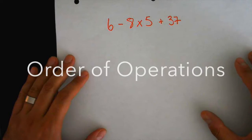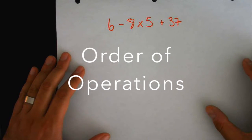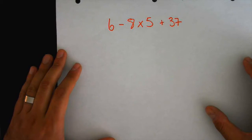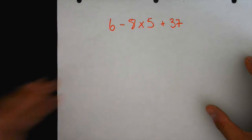Okay, so today we're looking at order of operations. Your question is 6 minus 8 times 5 plus 37. Who'd like to come up and share their strategy?